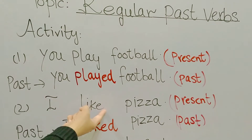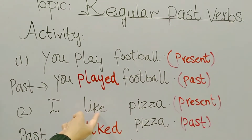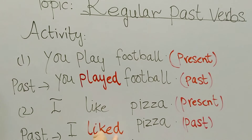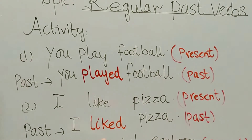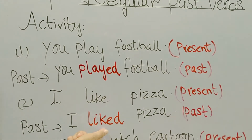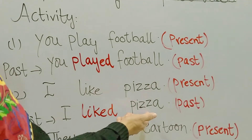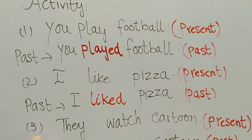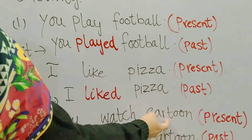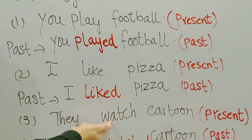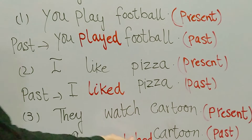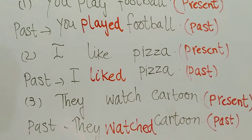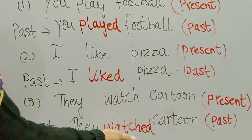Sentence two: 'I like pizza.' Here, 'like' is changed by adding 'd' at the end, making it 'liked'. This is also called a regular past verb — 'I liked pizza'. Sentence three: 'They watch cartoon.' By adding 'ed' at the end of 'watch', we can convert it into past tense: 'They watched cartoon.'